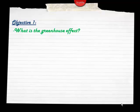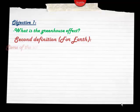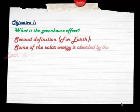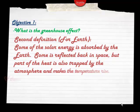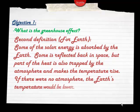Let's look at the second definition, this time for the Earth. Some of the solar energy is absorbed by the Earth, some is reflected back into outer space, but part of the heat is also trapped by the atmosphere and makes the temperature rise. If there were no atmosphere, the Earth's temperature would be much lower.